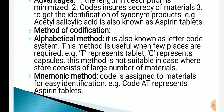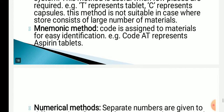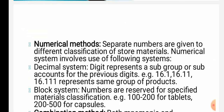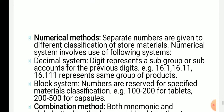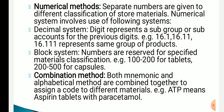The second method is mnemonic — a code is assigned to identify a drug. For example, code 'AT' means aspirin tablets, so you can easily identify the medicines. The numerical method means numbers are assigned to provide codes.